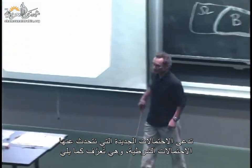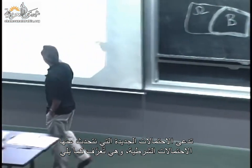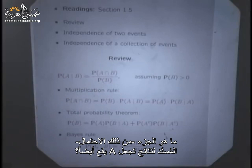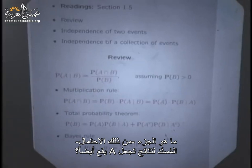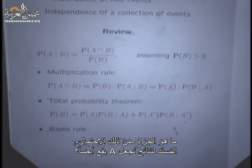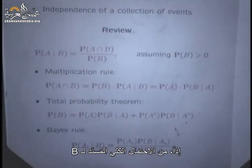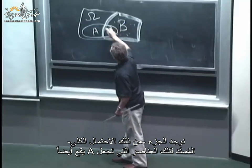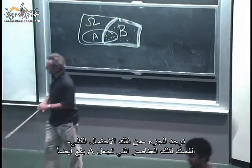The new probabilities are called conditional probabilities, defined as follows: the conditional probability that A occurs given that B occurred is calculated by this formula. Out of the total probability initially assigned to event B, what fraction of that probability is assigned to outcomes that also make A happen?